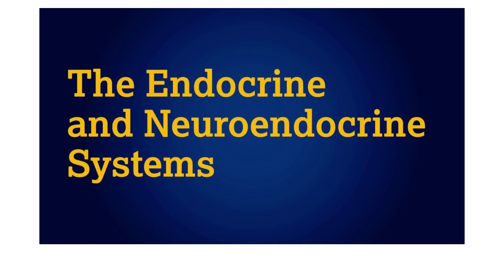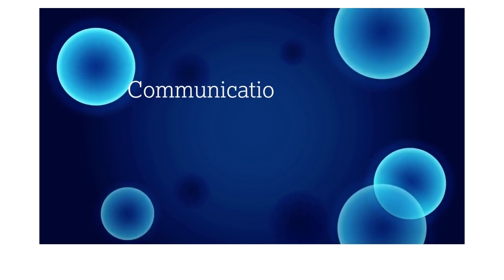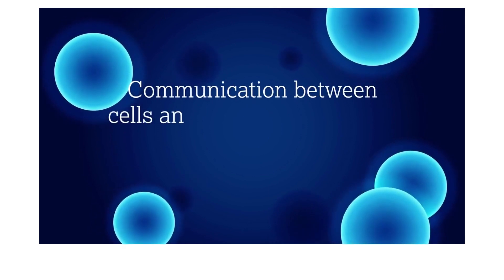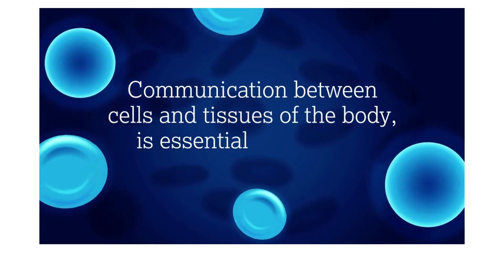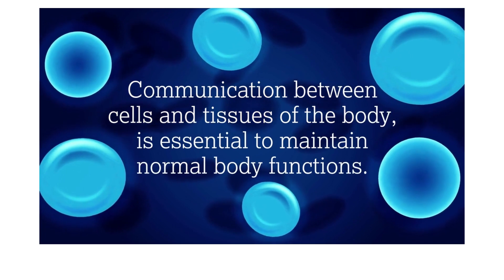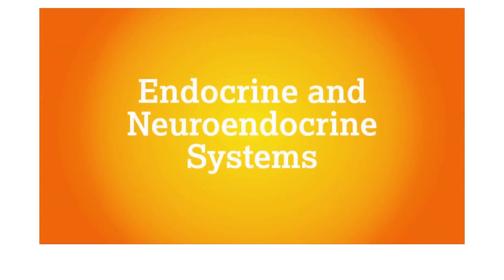The endocrine and neuroendocrine systems. Communication between the cells and tissues of the body is essential to maintain normal body functions. The complex systems responsible for this are the endocrine and neuroendocrine systems.